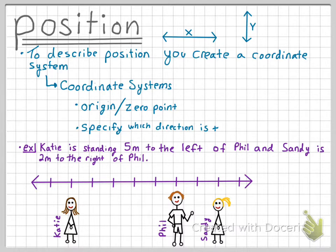For this first coordinate system, I've decided to call the direction to the right positive. If we say that Katie is at point 0, or the origin, this means that Phil must be at point 5, and Sandy must be at point 7.